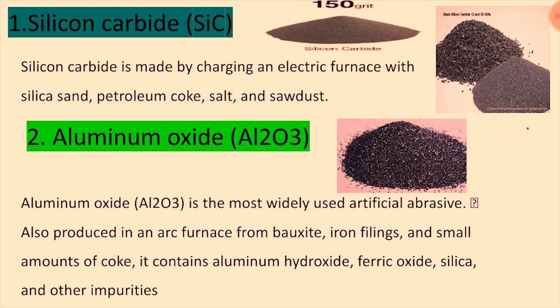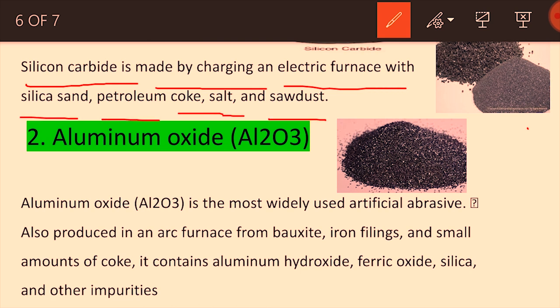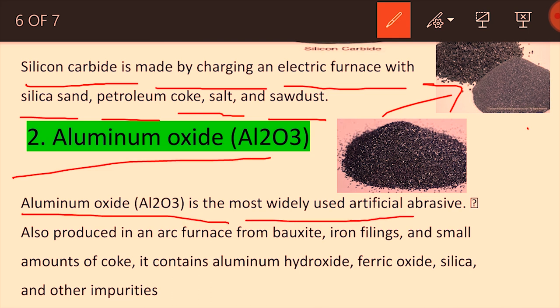The three examples of artificial abrasives are: silicon carbide (SiC), aluminum oxide, and diamond. Silicon carbide is made by charging an electric furnace with silicon sand, petroleum coke, salt, and sawdust. These are not natural — they are synthesized on requirement, and different mixtures give it specific properties.